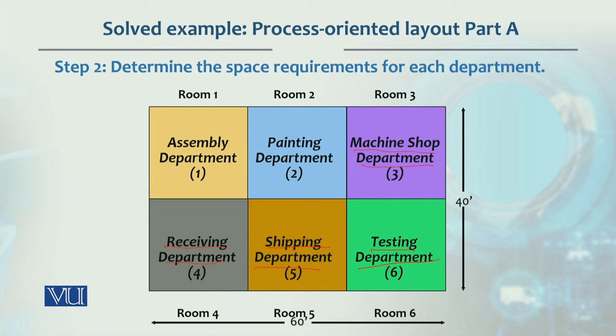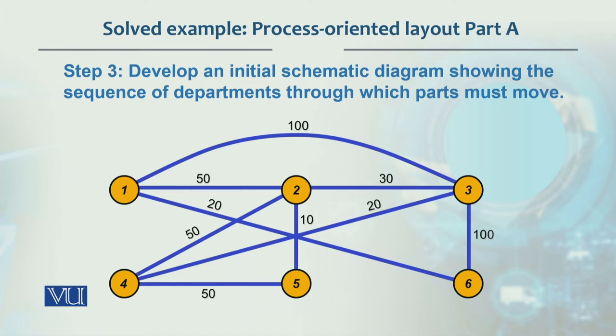In this case, there is a lot of movement and distance between departments, so we have to estimate the cost. We need a schematic diagram showing the sequence of departments through which parts move. There is a lot of movement, so we have to see the distance. Rectilinear distance is basically when you move at right angles.